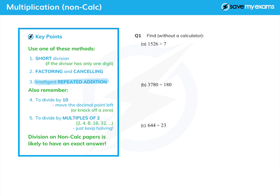A couple of other things to remember: if you want to divide by 10 just move the decimal point left 1 or knock off a 0, that's something you should know. And if you're asked to divide by a multiple of 2, so 2, 4, 8, 16, or 32 for example, just keep halving the number until you get to where you need to be. So for example dividing by 32 you'd halve it five times - we're not going to do one of those but that's quite easy.